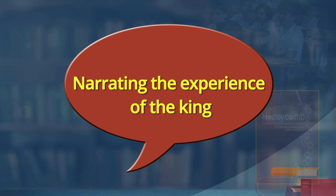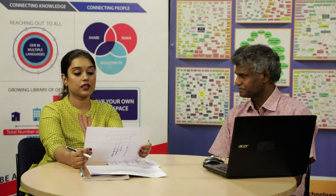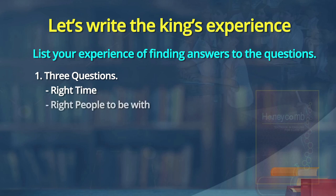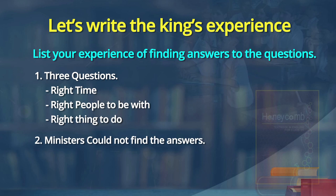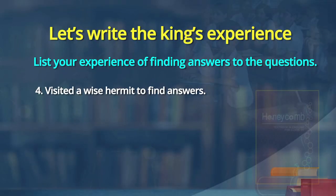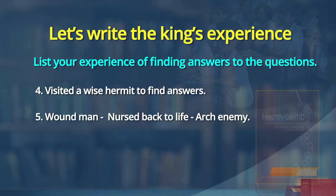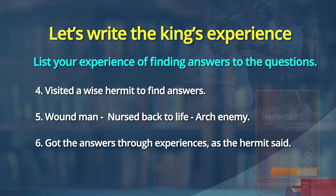Let me now ask you to read out the outline for the benefit of the learners. The task is learning to write by narrating the experience of the king in first-person narration. As an outline, I have written: three questions — right time, right people to be with, right thing to do; ministers could not find the answers; I decided to find answers myself; visited a wise hermit to find answers; wounded man nursed back to life; arch enemy; got the answers through experiences as the hermit said.